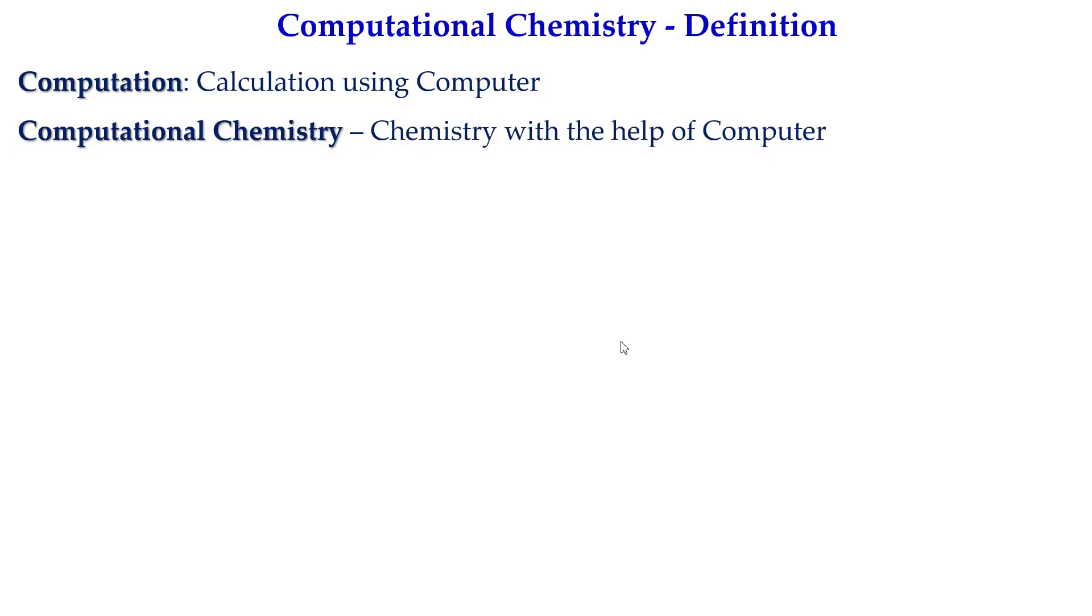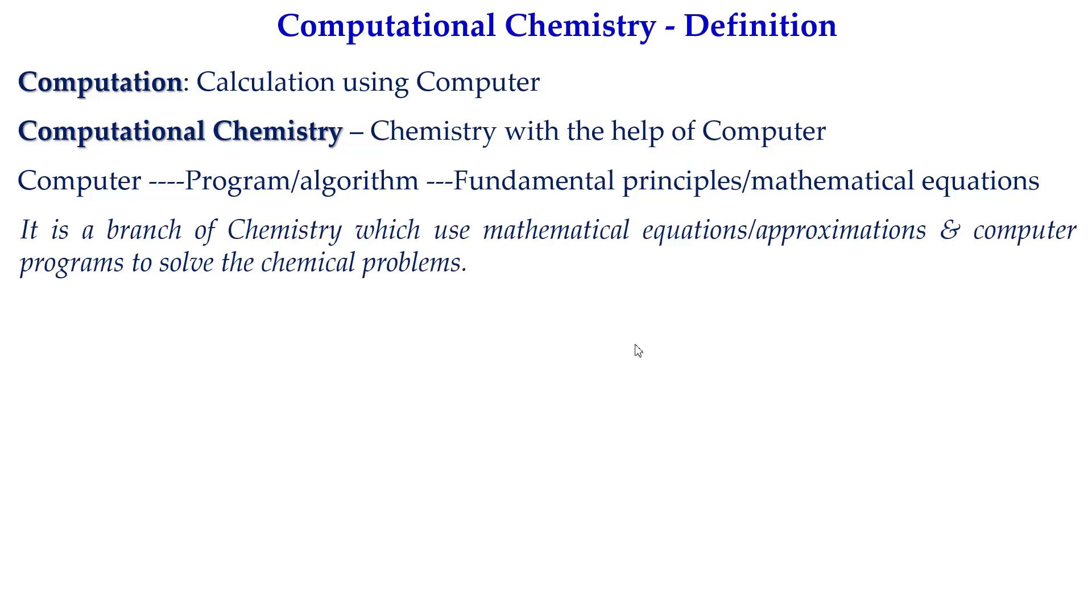Computational chemistry can be said that chemistry with the help of computer. Now, what we have to understand is how computer works. Computer needs some instructions which actually says the software and which also run by some algorithms or programmings. Behind the algorithms, there are some fundamental principles or mathematical equations which we are going to solve during the computation. It is a branch of chemistry which uses mathematical equations or approximations and computer programs to solve the chemical problems.